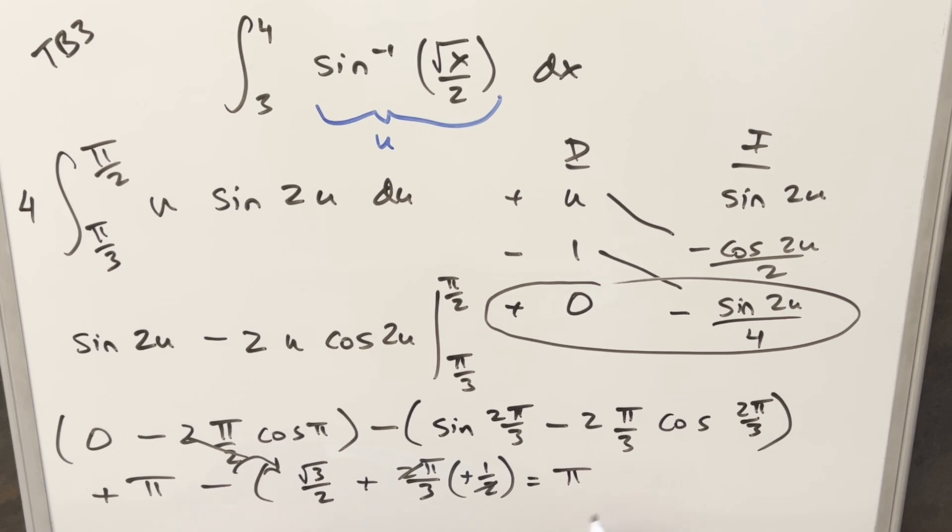So this is going to be pi. Distributing the minus, minus pi over three here. Minus square root of three over two. Putting that together for my final solution, we have just two pi over three minus square root of three over two. And that's it.